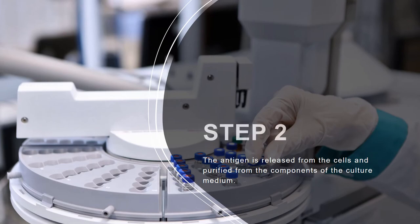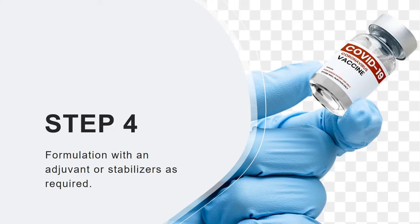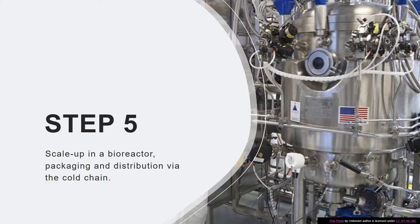This includes the process of purification of the antigen and removal of all accessory components, and inactivation and formulation of the antigen as the case may be. We will also be looking at adjuvants and the different types of adjuvants used with vaccines, as well as the scale-up of vaccines in bioreactors.